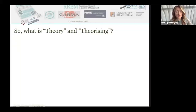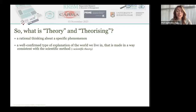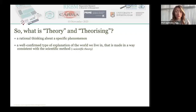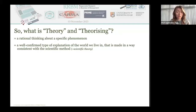Let me start with asking a question: What is theory? Generally speaking, we could say that theory is a rational type of abstract thinking about a specific phenomenon. Or, to be more specific, we could say that theory is a well-confirmed type of explanation of the world we live in, made in a way which is consistent with the scientific method, where the scientific method is simply an empirical way of acquiring knowledge about a specific phenomenon.